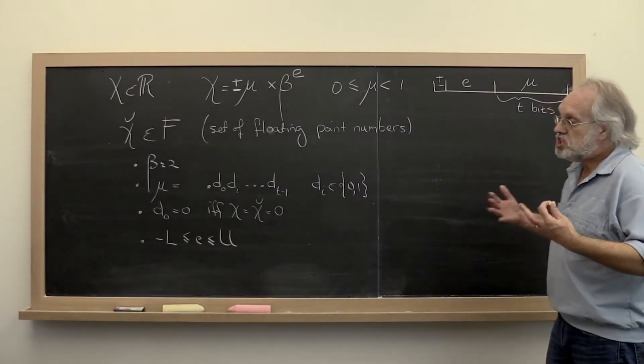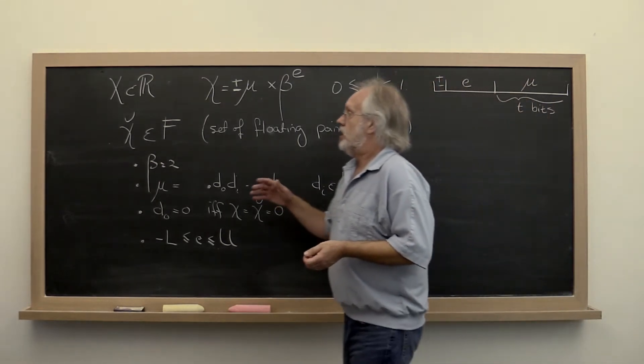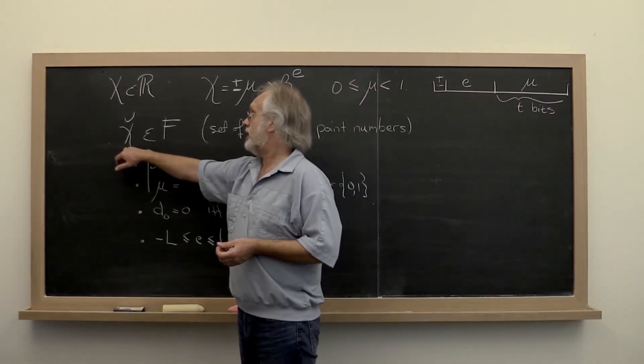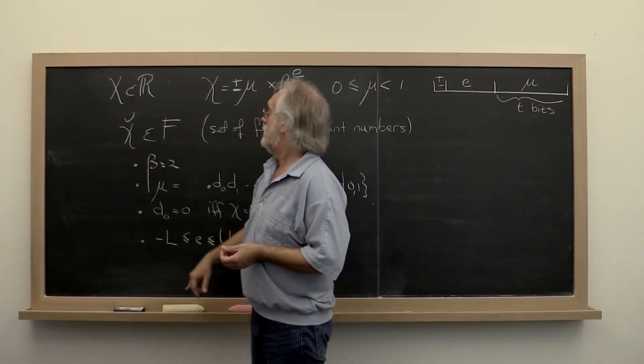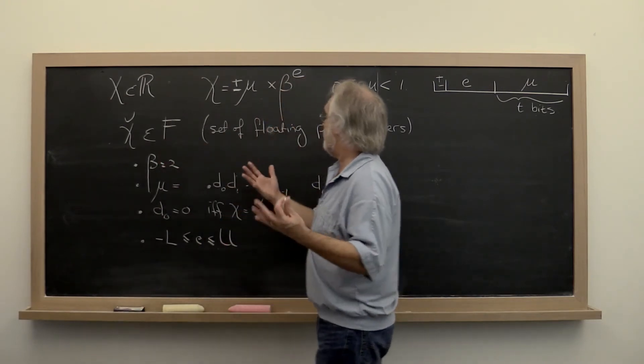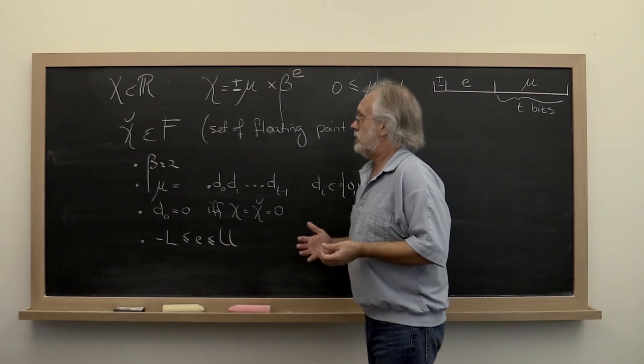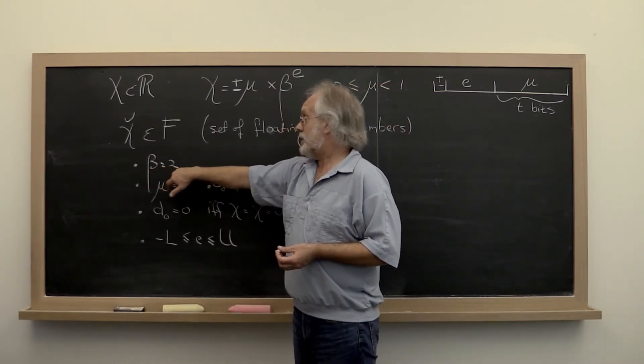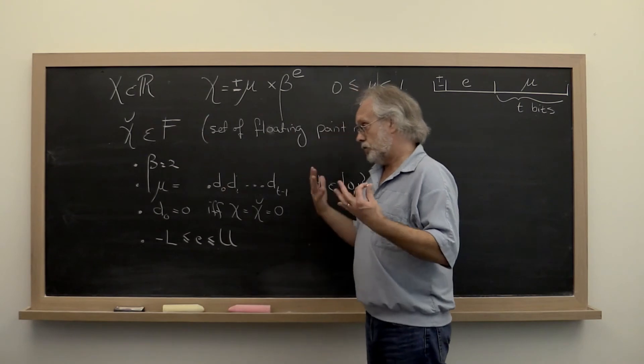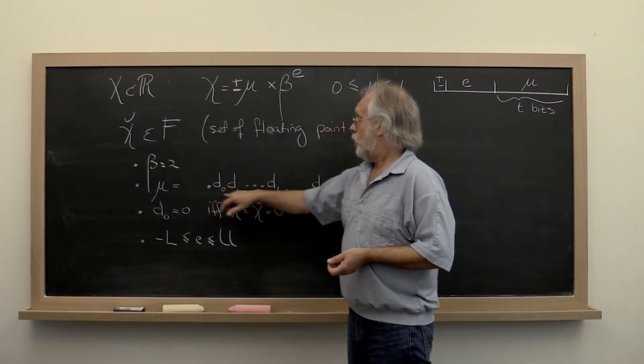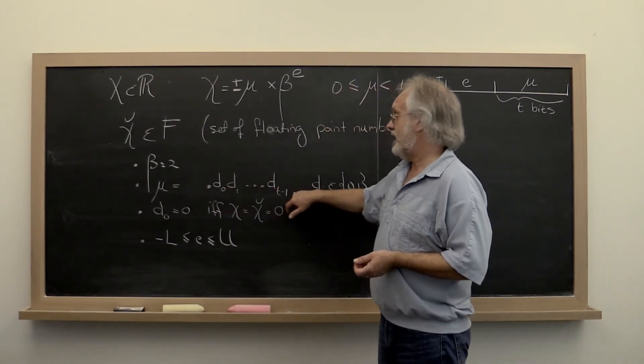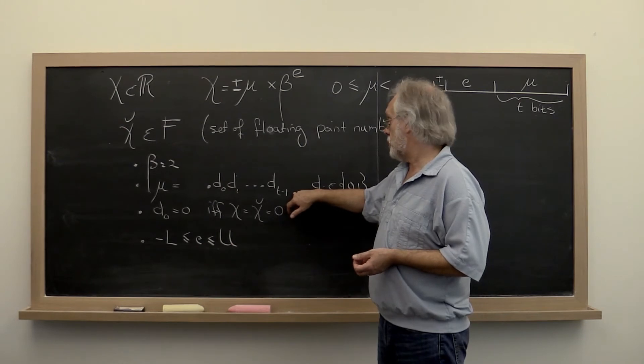So in a typical situation, a number χ̃ is in the set of floating point numbers in a particular situation. When the base that we use is equal to 2, we're storing binary numbers. We then end up with t binary digits that are stored.